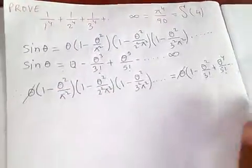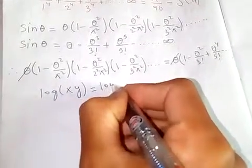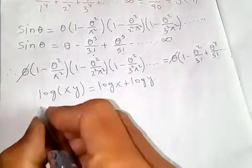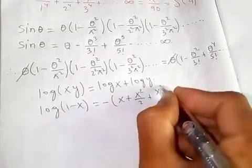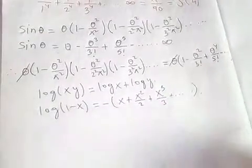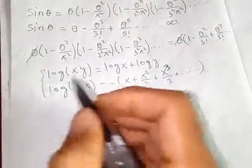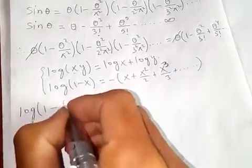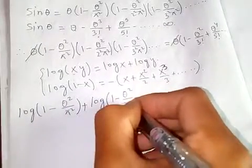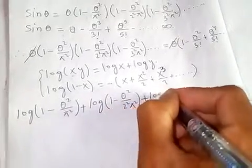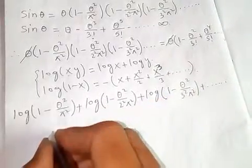Taking logarithm of both sides and applying it, we get: log(1 minus θ squared over π squared) plus log(1 minus θ squared over 2 squared π squared) plus log(1 minus θ squared over 3 squared π squared) plus and so on, which equals the log of the right-hand side.